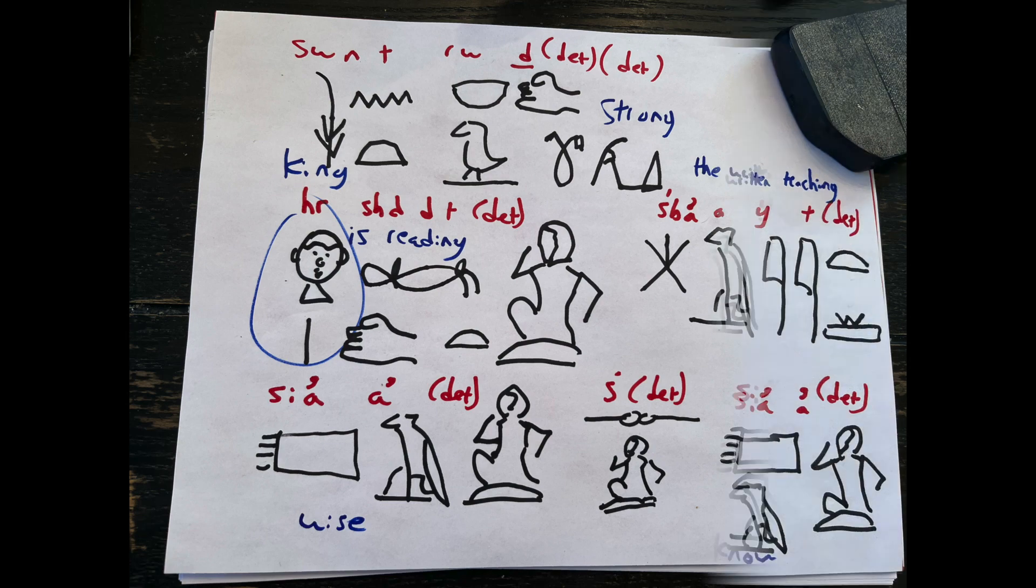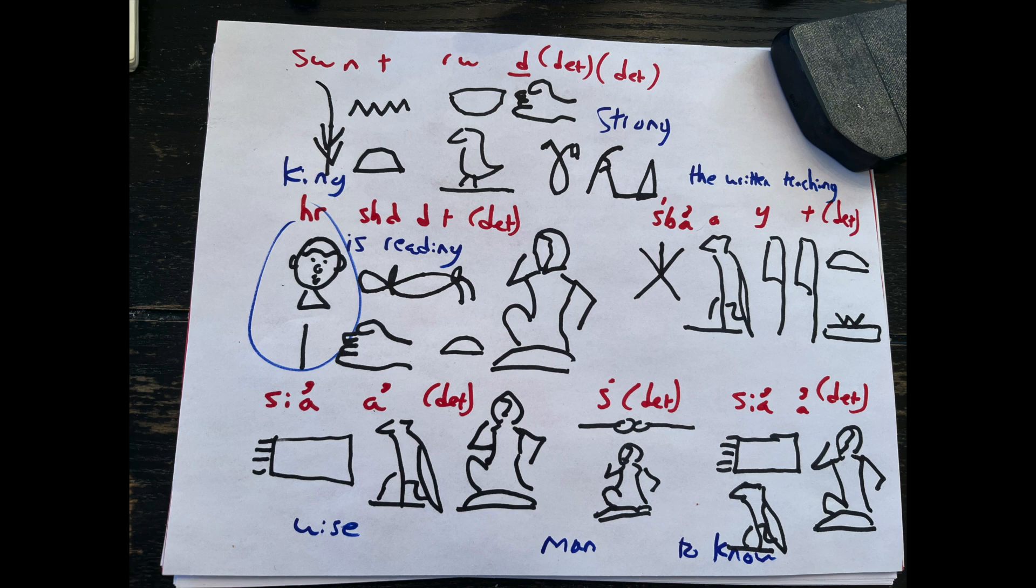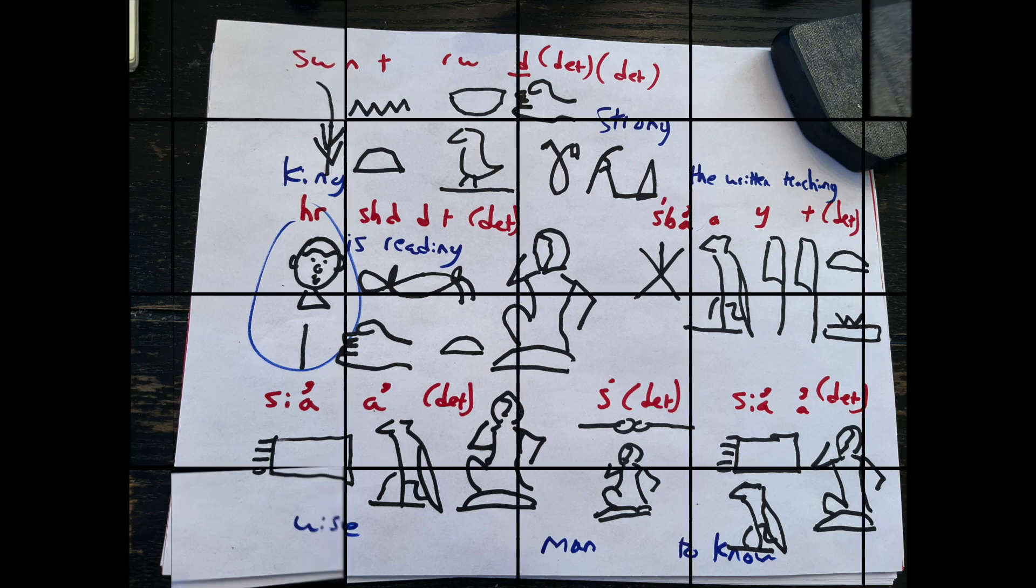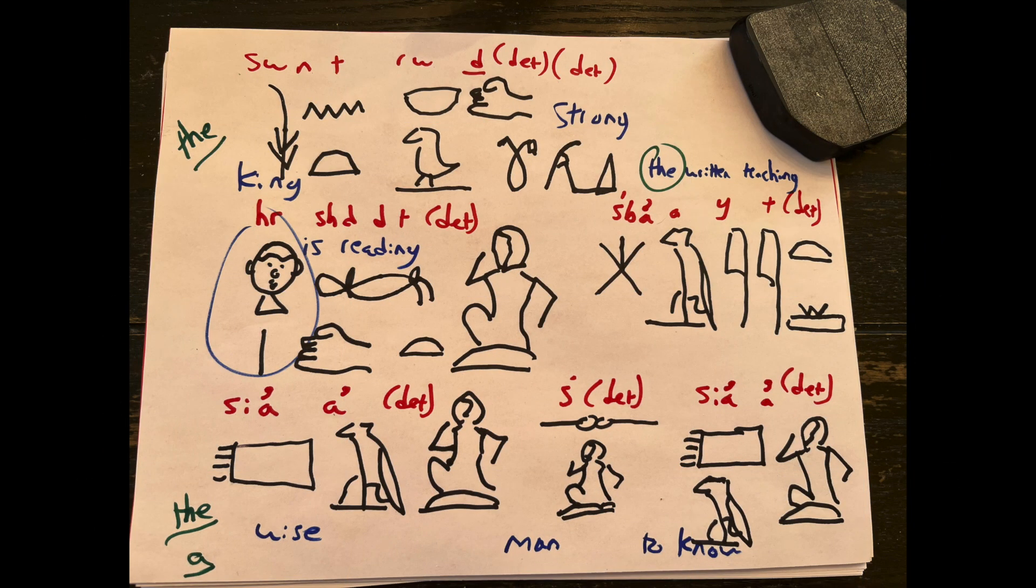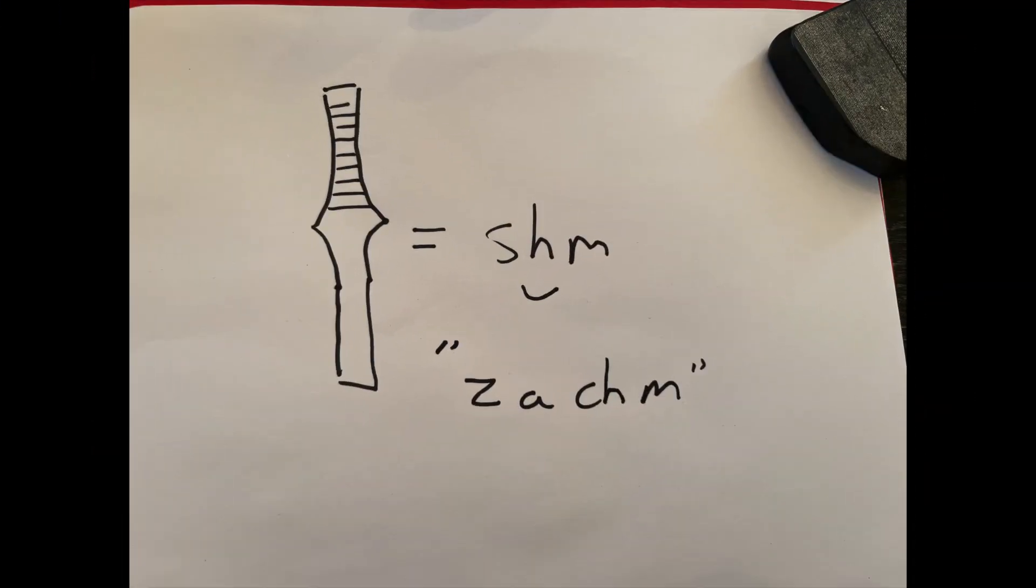He's reading the written teaching, and what type of written teaching? It's the wise written teaching, because why would you read anything else? It's written by a wise man who's in the know. Then we can add our articles and extra words that don't exist in Egyptian, so we get: the strong king is reading the written teaching of the wise man in the know. I know hieroglyphics are up for interpretation - hence dead language - but we're learning vocabulary and that's what's important.